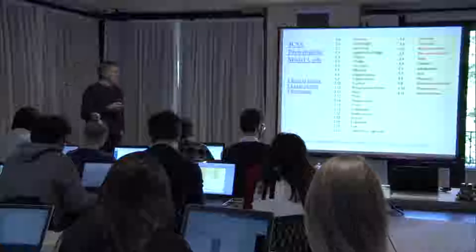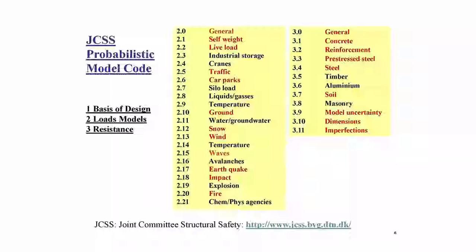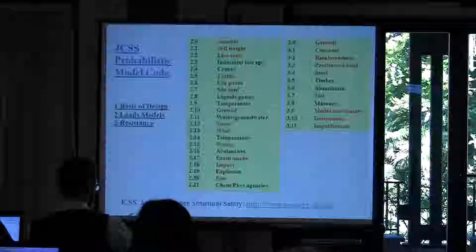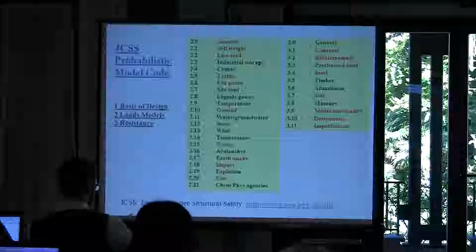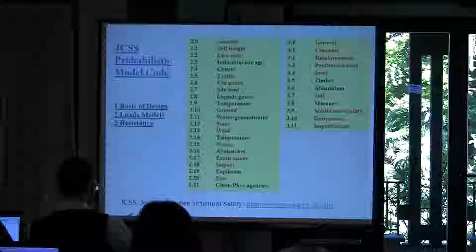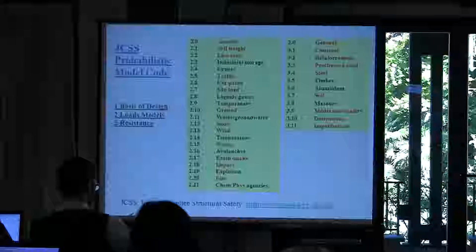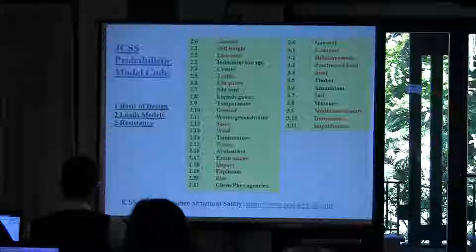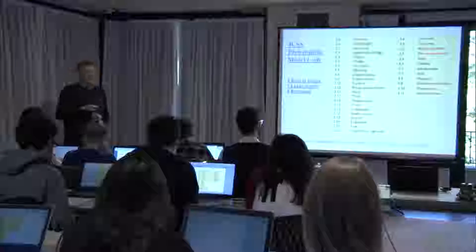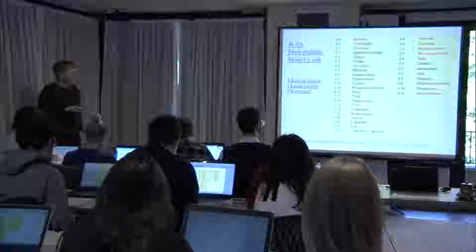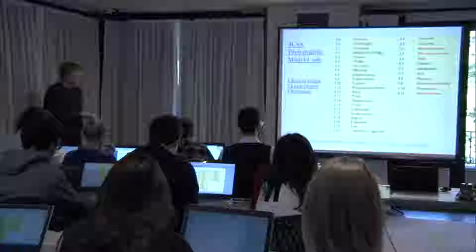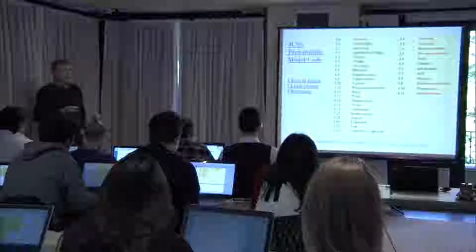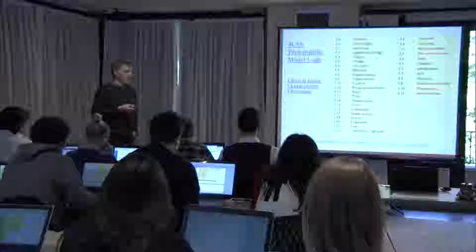For more information on all this, the Joint Committee on Structural Safety Probabilistic Model Code has three parts. One part is related to basis of design, and it also contains a lot of information about how to model loads and resistances from a probabilistic point of view, covering many different loads and materials. All of this can be found on the Joint Committee on Structural Safety webpage.